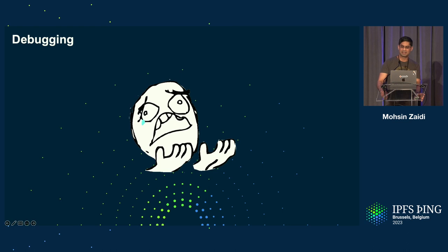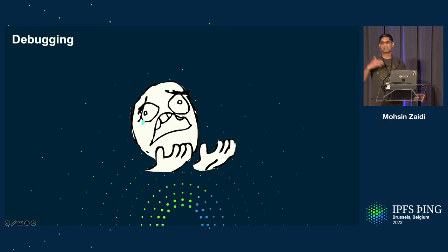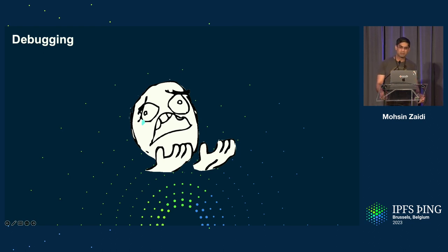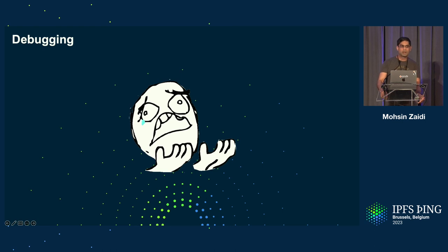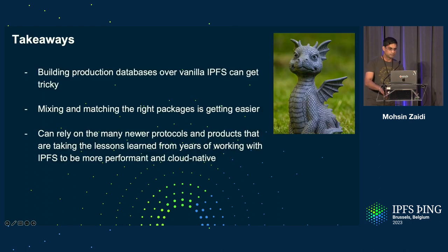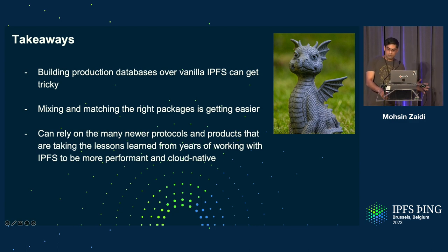Debugging. I have looked at Kubo logs many times, looked at the first page, and then closed the tab — it's hard to tell what matters. Logs can be verbose and can include errors from other nodes, which has been really confusing. There's no easy way to identify sources of memory growth or sources of delays.